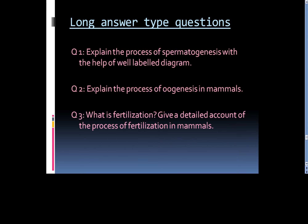The third category of questions is long answer type questions. Question 1: Explain the process of spermatogenesis with the help of a well-labeled diagram. Question 2: Explain the process of oogenesis in mammals. Question 3: What is fertilization? Give a detailed account of the process of fertilization in mammals.